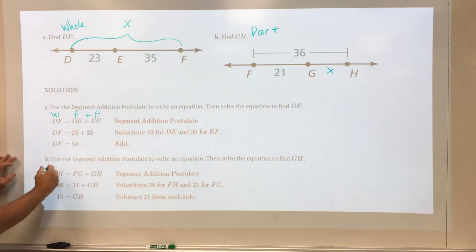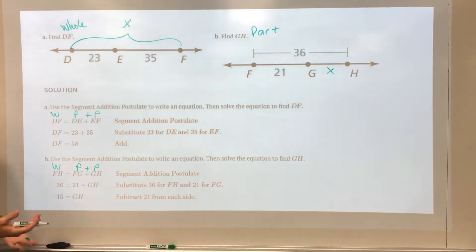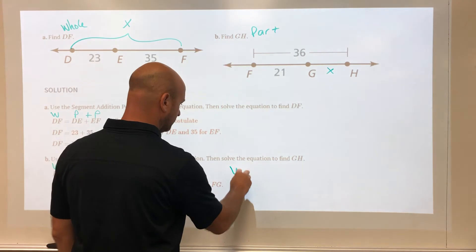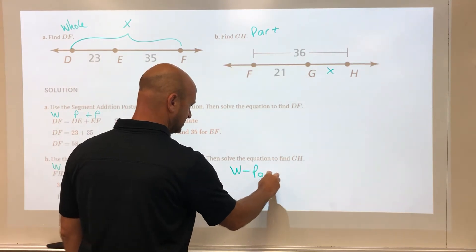In our setup here we have the whole thing, which is 36, is equal to part plus part. Well in this case GH, the part they want, we don't know. So what we end up doing in this case is we take the whole thing minus the part we're given.